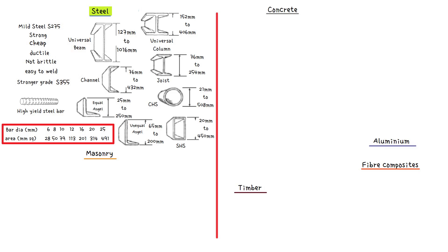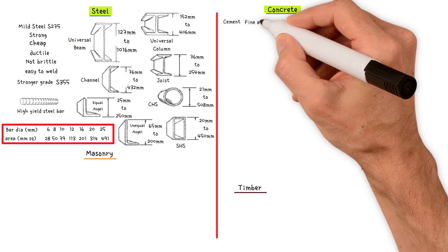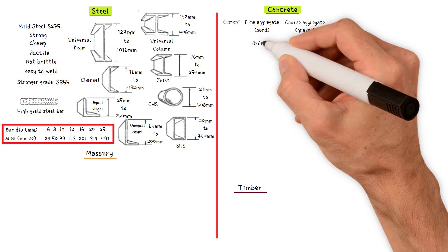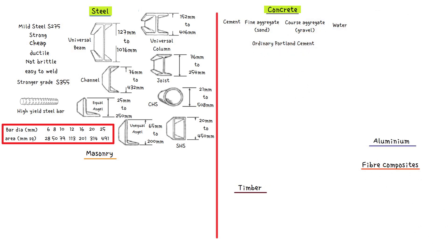The next material we will discuss is concrete. Concrete is made up of four main constituents: cement, fine aggregate (sand), coarse aggregate (gravel), and water. Ordinary Portland cement is the most common type of cement. Special cements are available such as rapid hardening cement, and there is also an extensive range of admixtures to modify the properties of concrete. Examples are waterproofing agents and plasticizers which improve the flow of the wet concrete mix. The proportions of the constituents are varied to produce a workable mix of the required strength. This process is known as mix design.